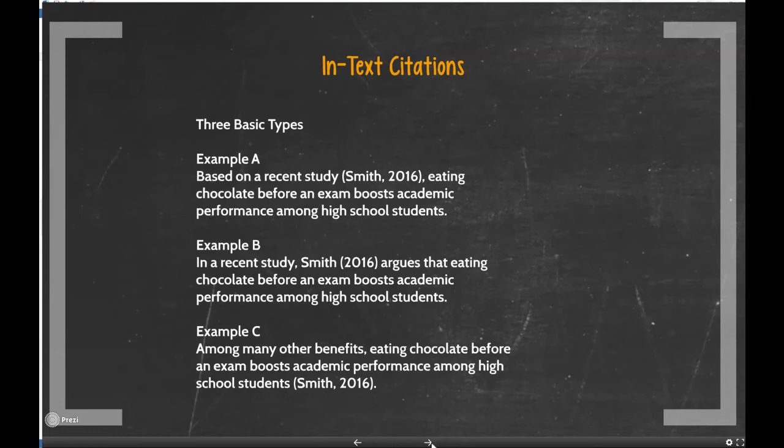Example C puts the focus completely on the finding, fact, or idea you're getting from the article. So it just reads: 'Among many other benefits, eating chocolate before an exam boosts academic performance among high school students (Smith, 2016).' The citation appears in parentheses at the end, indicating the finding comes from Smith. Example C is suited to a paragraph where many benefits are discussed and each sentence might cite a different study, with emphasis on content rather than authorship.